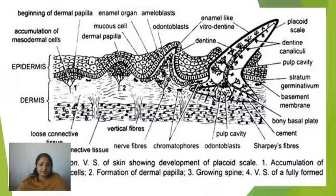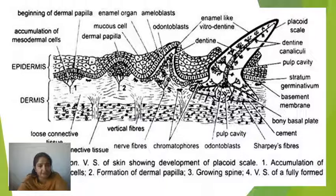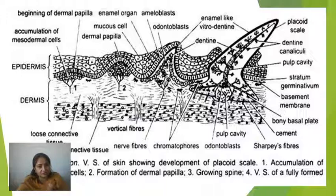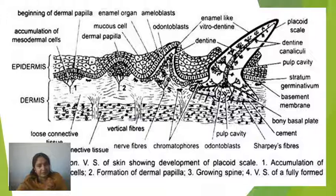Now looking at the development of Placoid scales. In the beginning, you can see the epidermis. Where the Placoid scale is to be created, there is a dermal layer below. An accumulation of mesodermal cells forms in the dermis just beneath the epidermis — we call this the dermal papilla. The outermost cells of the dermal papilla will differentiate into odontoblasts.